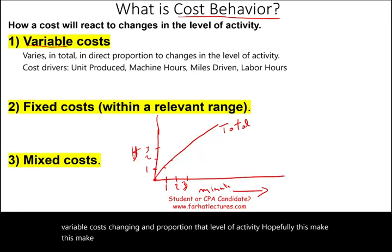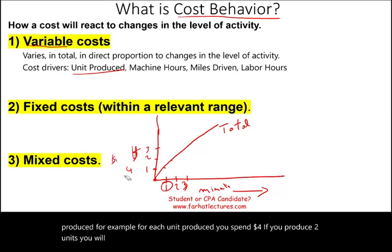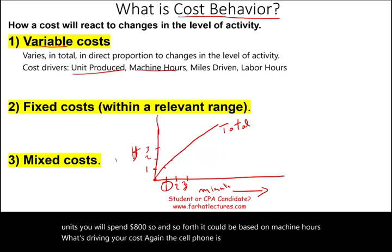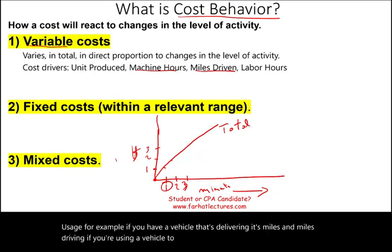In the real world, you might have cost drivers such as units produced — for each unit produced, you spend $4; if you produce two units, you spend $8, and so on. It could be based on machine hours, what's driving your cost. For the cell phone, it's usage. For a vehicle that's delivering, it's miles driven. It could also be labor hours. Those are all cost drivers.